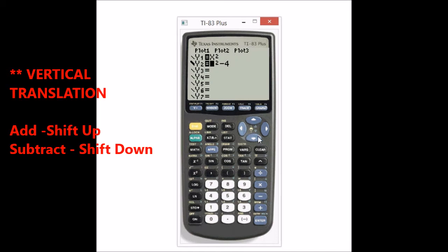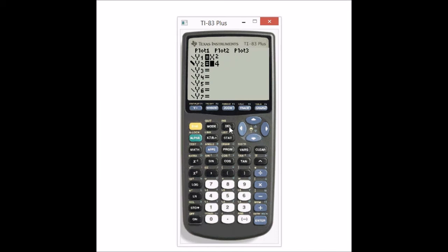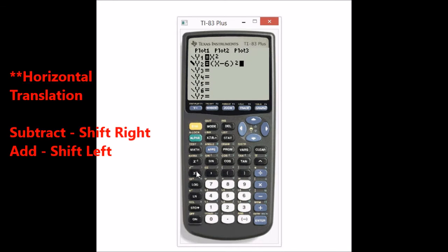Now let's take a look at another type of translation. Let's keep the x squared there but let's say if we have x minus six close the parentheses and square this whole thing. Now let's see what type of translation we have with this. Let's press the graph button. And as you see the bold graph is shifted six units to the right in the positive direction.